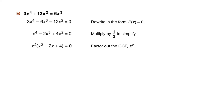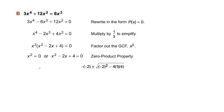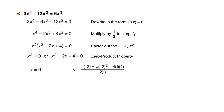Now we should attempt to factor the quadratic trinomial x squared minus 2x plus 4, but not finding that it factors nicely, we'll continue on and use the zero product property. Either x squared equals zero, or the quadratic trinomial x squared minus 2x plus 4 equals zero. From x squared equals zero, x equals zero. And from x squared minus 2x plus 4 equals zero, we use the quadratic formula to solve.